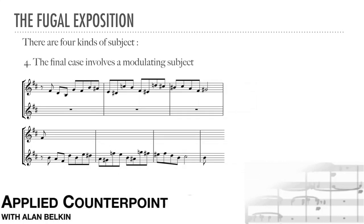The final situation involves a modulating subject. If the subject — and we're no longer talking about the head of the subject, but rather the main body of the melody — if it modulates internally to the dominant, the answer must modulate back to the tonic. Since the two modulations are not identical, up a fifth versus up a fourth, it becomes necessary to make a change at the point where the subject modulates. The head of the subject may or may not already have been altered. For the modulation, once again, make the change as subtle as possible.